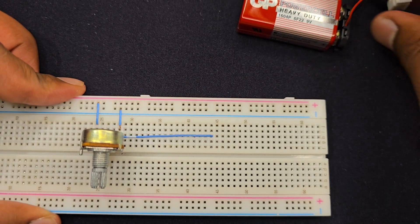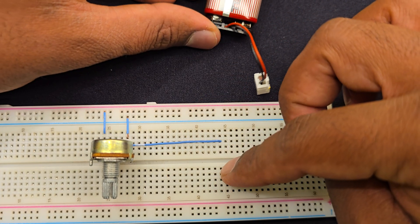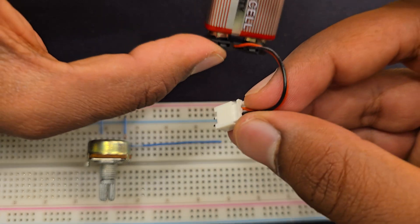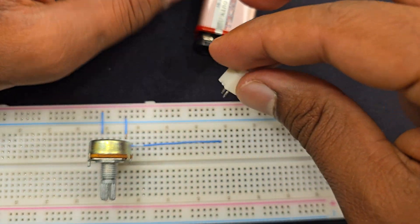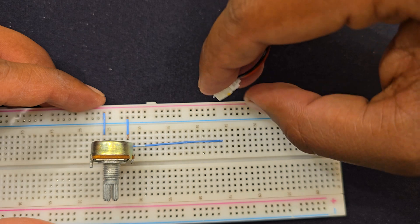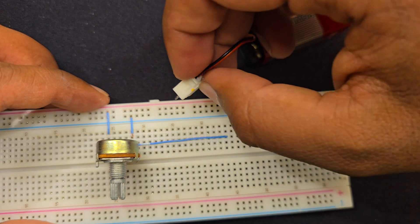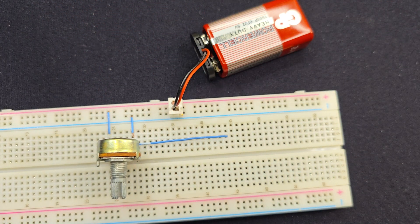And today what I'm going to do is use this device to control the brightness of an LED. I'm connecting this 9-volt battery to the breadboard power supply rail. Like that. So the voltage divider is ready.